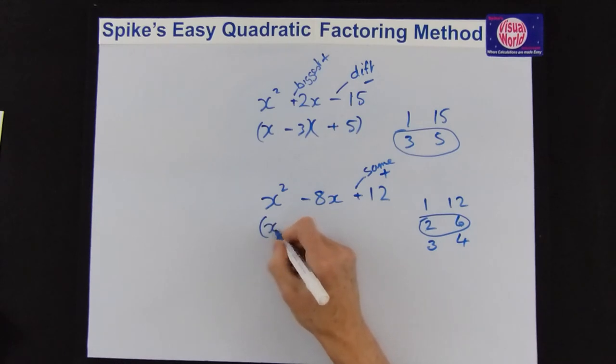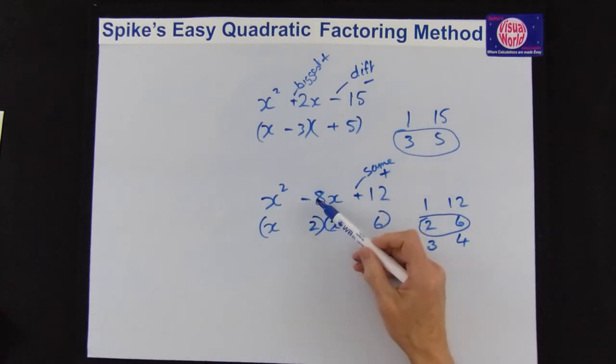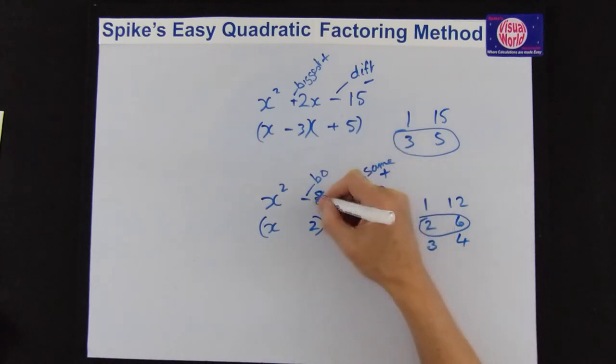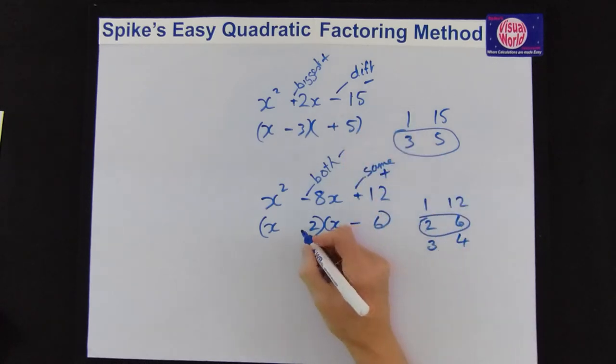so you've got x, x, you've got 2 and 6, and they were the same, so if you add 2 minuses or 2 pluses, it's got to be the 2 minuses to give you a minus, and that tells you that they're both, remember if it's plus, they're both something, so they're both minuses, and that is your answer.